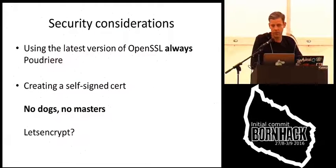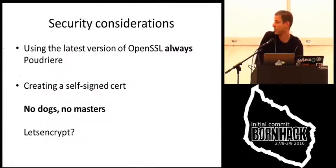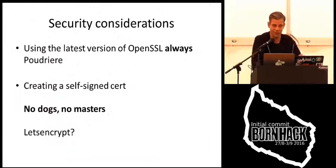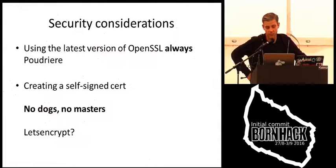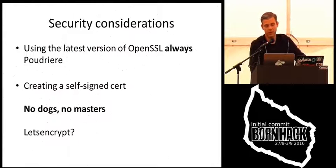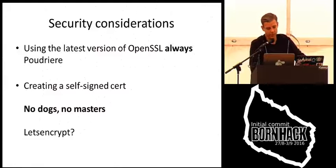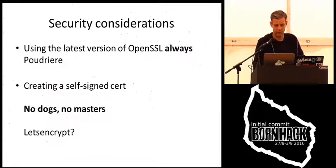I use the latest version of OpenSSL always, because there have been so many attacks on OpenSSL recently. I make sure to read the mailing list and whenever a patch is created I use it. I use something called Poudriere, which is a package system — it'll build all the packages for the server, and I only need to look at the mailing list. If there's a new package for OpenSSL, I just say install that package and it's already built.